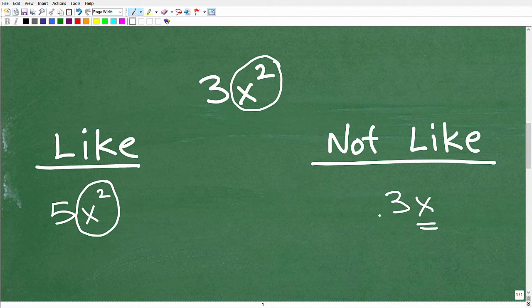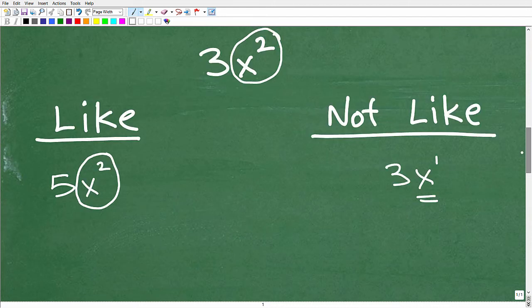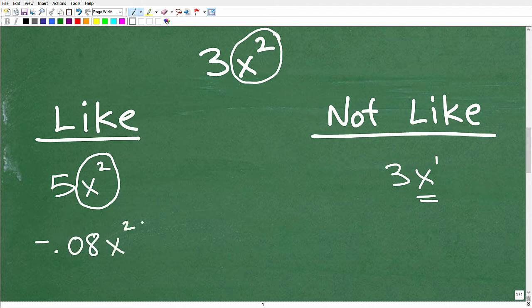These have to be exactly the same. So if you look here, this is 3x. It looks very similar, but this is only 3x to the first. We need 3x squared. So if these components of a term, when you're comparing two terms, are the same, then they are like. Very critical. So let's go ahead and write some other like terms down here. You can have negative 0.08x squared. That is a like term to this. And let's write another one that is not like. How about 3x cubed. Again, very close, but not like.